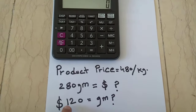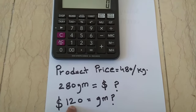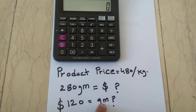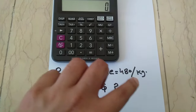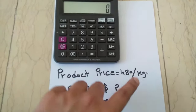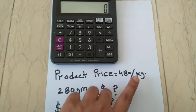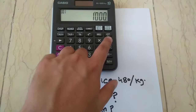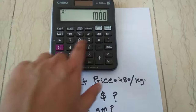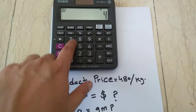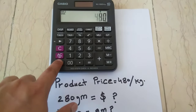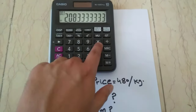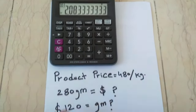The second calculation: if you want to spend 120 dollars and want to know how many grams you'll get, type 1000 and divide by 480, which equals 2.08. Then multiply 2.08 by 120.